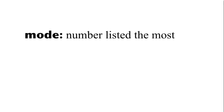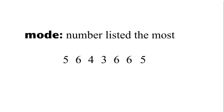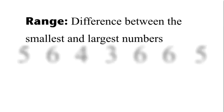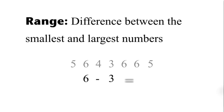Moving on, the mode is the most. Look at your data. Which number is listed the most? That number is the mode. Sometimes a set of numbers will have more than one mode, and sometimes there will not be a mode. The range is simply the difference between the least and greatest number on the list.